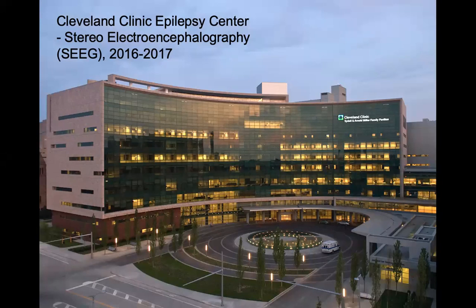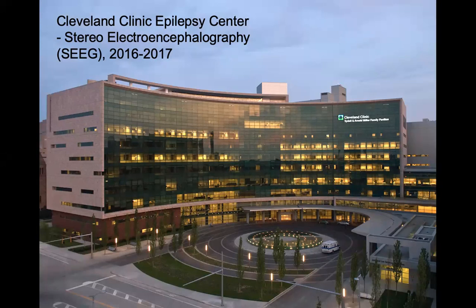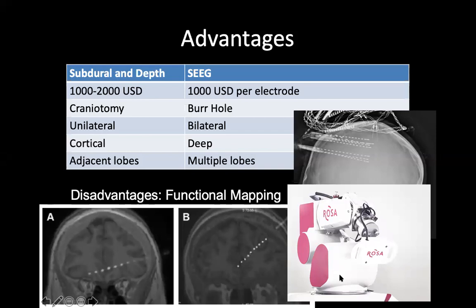Because of the limitations and the changes in practice toward stereo EEG, I spent about 6 months in Cleveland at the end of 2016 into early 2017 during the winter — every day it was snowing and very cold. The advantage of stereo EEG is that it uses burr holes with no craniotomy. We can record both hemispheres and even deep structures like the insula and cingulate cortex, as well as multiple lobes from frontal and parietal to occipital and temporal. In Cleveland they use the ROSA robotic arm to implant the electrodes.